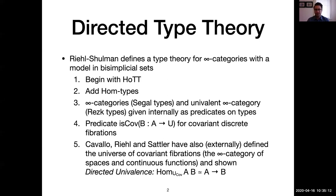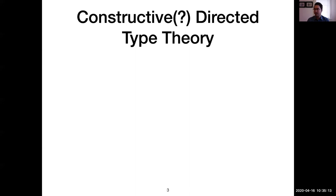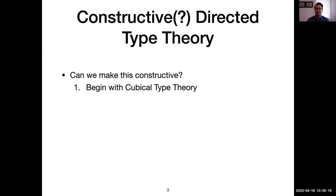Emily Riehl, Evan Cavallo, and Christian Sattler have defined this externally in the bisimplicial model and shown that directed univalence holds in this universe. In particular, the morphisms in this universe are continuous functions, as we'd want when thinking of it as the infinity-category of spaces. That's the existing work on directed type theory.